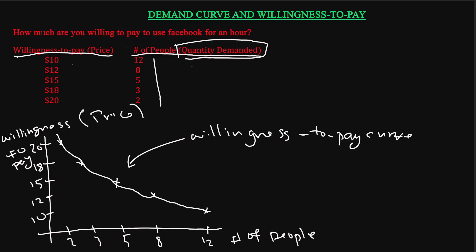If the price is $10, how many people will actually pay to use Facebook? Everybody will pay, because even those willing to pay $20 will pay since $10 is less than $20. But if the price is $20, only two people are willing to pay. So as the price falls from $20 to $10, the number of people willing to pay increases — this is the same negative relationship between price and quantity demanded. The willingness to pay curve is also called the demand curve.